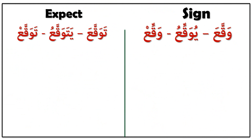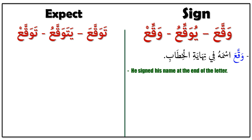Next verb: وَقَّعَ، يُوَقِّعُ، وَقَّعَ — it means 'to sign.' وَقَّعَ اسْمَهُ فِي نِهَايَةِ الْخِطَابِ — it means 'He signed his name at the end of the letter.' وَقَّعَ: he signed, اسْمَهُ: his name, فِي نِهَايَةِ الْخِطَابِ: at the end of the letter.